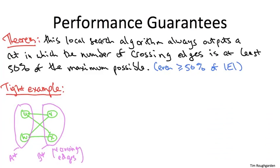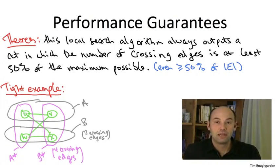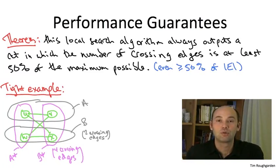On the other hand, one possible output of the local search algorithm is the cut where U and V are in one of the groups A and W and X are in the other group B. So this cut has only two crossing edges, only 50% of the maximum possible. Yet it is locally optimal. If you take any of the four vertices and switch it to the other group, you get a cut with three vertices on one side and then the other vertex by itself. Since every vertex in this graph has degree two, all of those cuts are also only going to have two crossing edges.